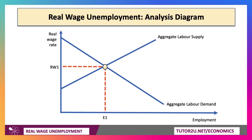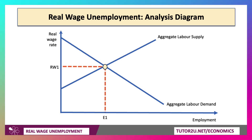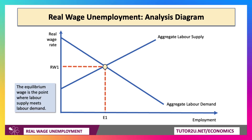In terms of a labour demand and labour supply diagram, we'll use aggregate labour supply and demand as a proxy for the whole economy. There's a positive relationship between the real wage and labour supply, but a negative relationship between the real wage and labour demand. The equilibrium wage is RW1, with E1 employed — that's the point where labour supply meets labour demand.